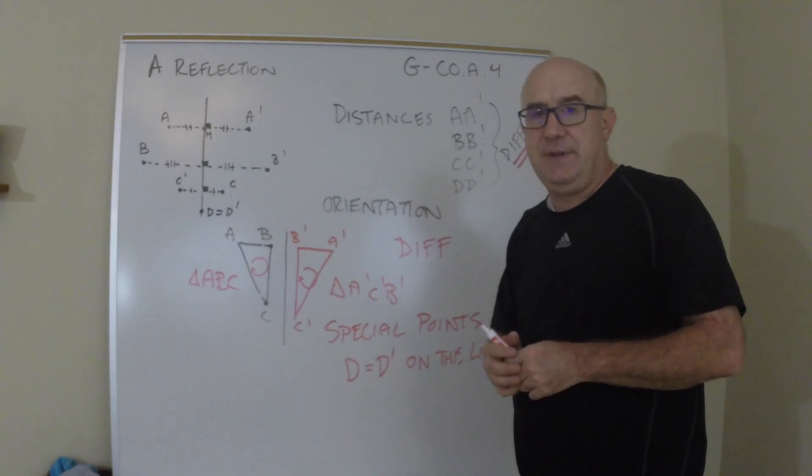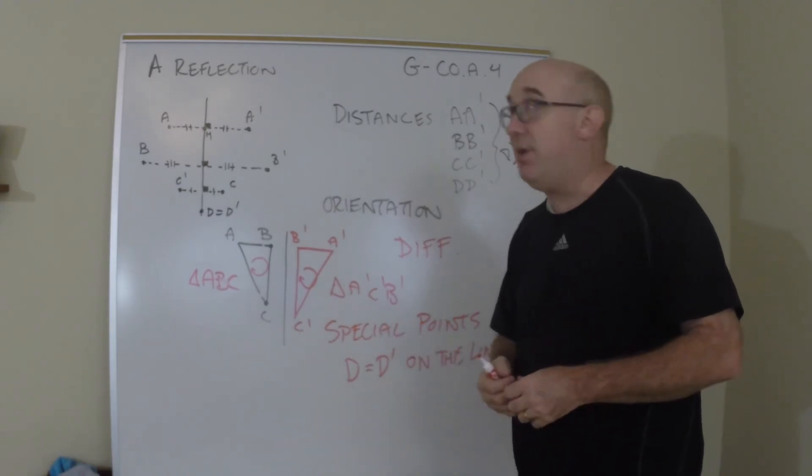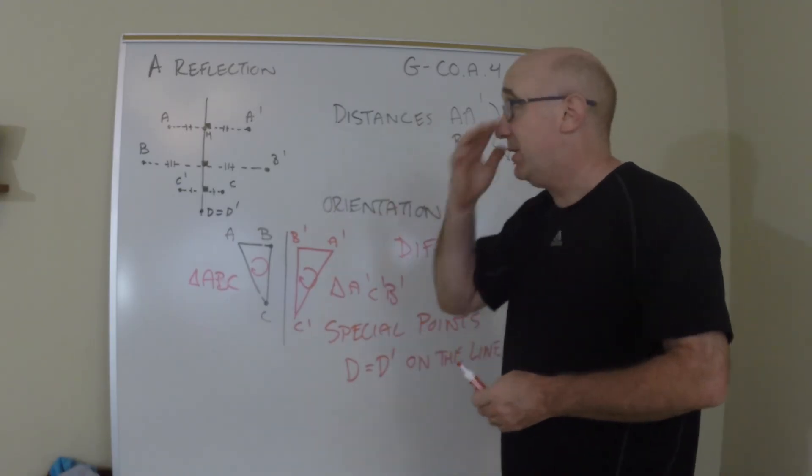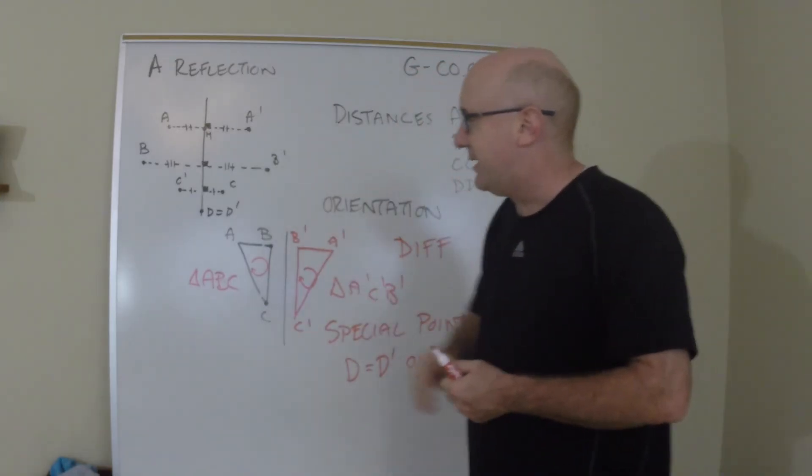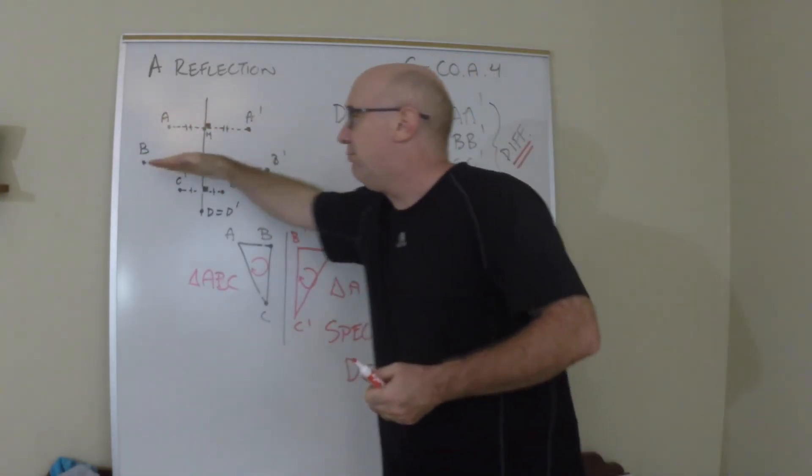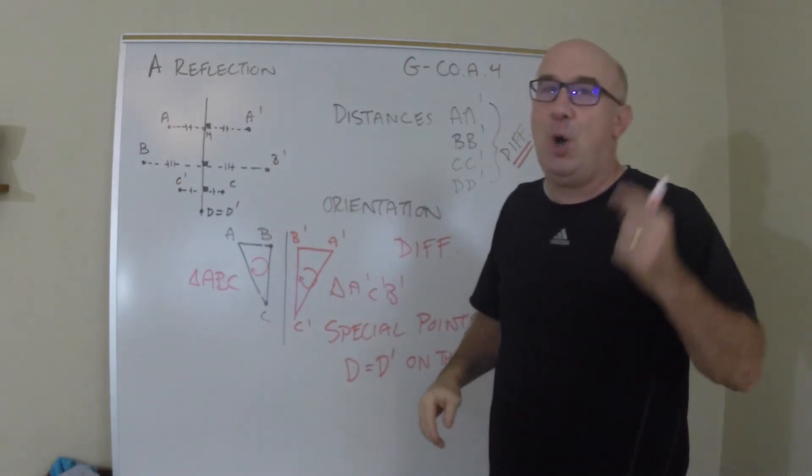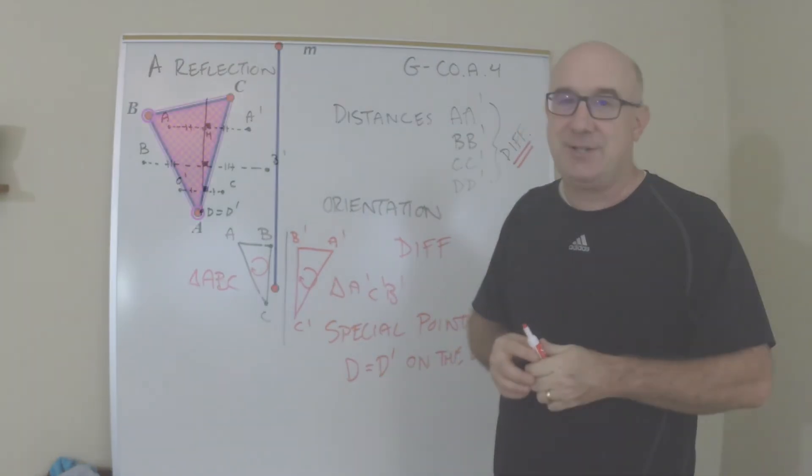So that gives us a pretty good feeling for the guts of what's going on behind the scenes of a reflection. We've got perpendicular bisectors, we have parallel motion, and they're all perpendicular to the same line of reflection.